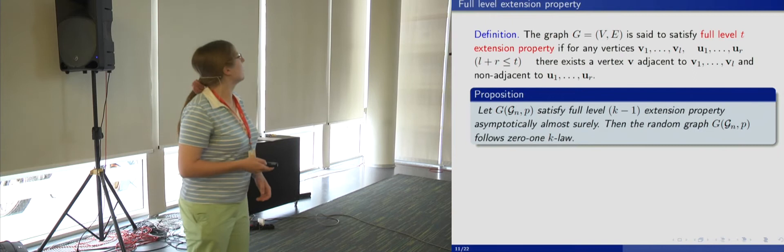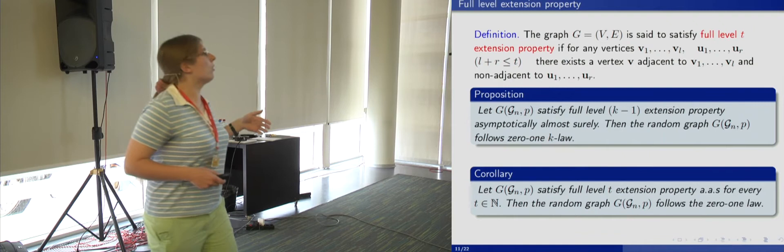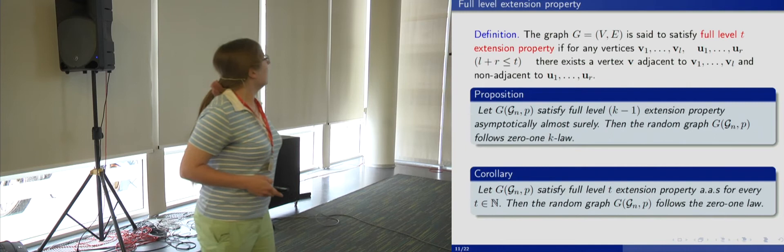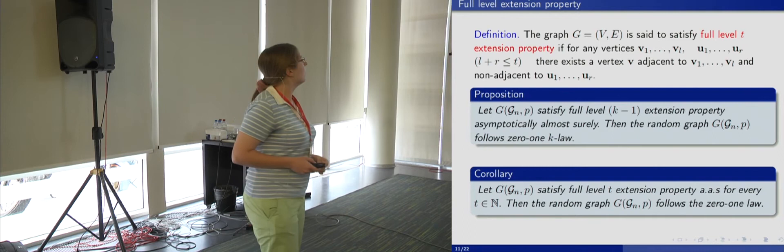They proved the following proposition: let G(G_N, P) satisfy the full level K minus 1 extension property asymptotically almost surely. Then the random graph follows the 0,1 K law. This proposition has the following corollary for the 0,1 law, because the 0,1 law holds if and only if the 0,1 K law holds for any K. So in order to prove the theorem about the 0,1 law for a random distance graph, I also used the full level extension property.